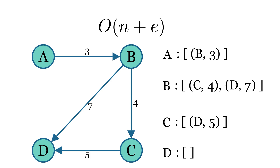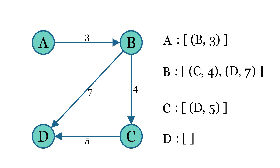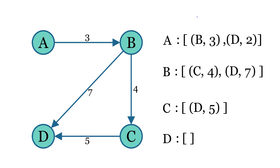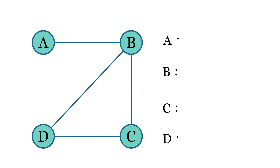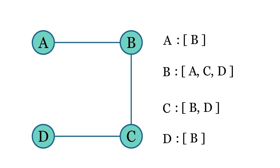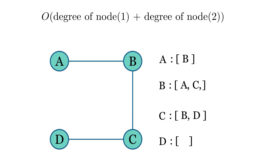When the graph is dense, the number of edges tends to approach the square of the number of nodes, so the space complexity of the adjacency list also becomes close to O(N²). Adding an edge is a constant time operation because we only need to append that edge to the adjacency list of the node — once for a directed graph, or twice for an undirected graph. Removing an edge requires searching for that particular edge in the adjacency list, so the time complexity is proportional to the out-degree of that node. In an undirected graph, we need to search the lists of both connected nodes, so the complexity is proportional to the sum of the degrees of both nodes involved.